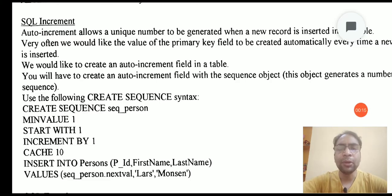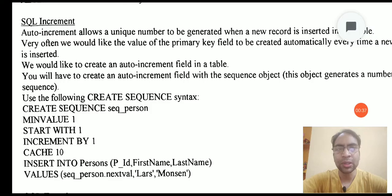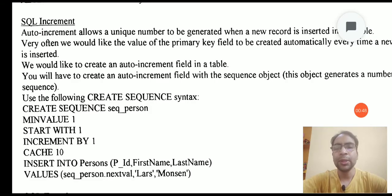Many times when we create a table we need to create a primary key field, and we always wish that the primary key field automatically increases and inserts into the table. For example, let us say student ID. If we have inserted the first student with ID 01, then we expect it should automatically increment from 01 to 02 when the next student comes and registers. In that case we need to use an auto increment concept that can be applied to the tables.